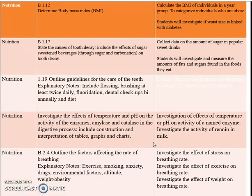Nutrition continues with the objective of determining the body mass index — BMI. Students can calculate the BMI of individuals in a year group, class, family, or community to categorize individuals who are obese. Students will also investigate if waist size is linked with diabetes, taking waist measurements from persons who have diabetes to see if waist size is associated with the condition.